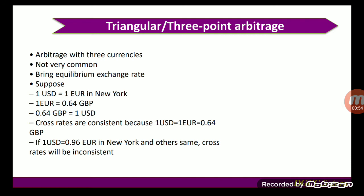If 0.64 Great Britain pounds equals one US dollar, then the cross rates are consistent, because one US dollar equals one euro equals 0.64 Great Britain pounds. In this case, the rates are in equilibrium.